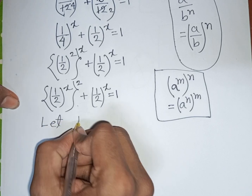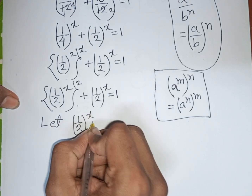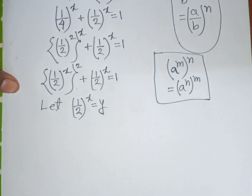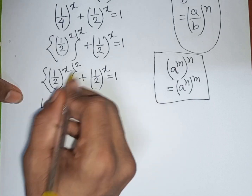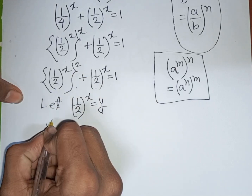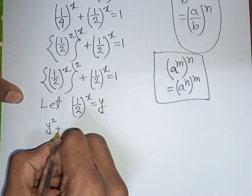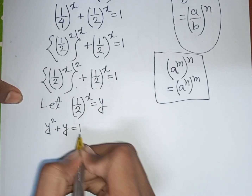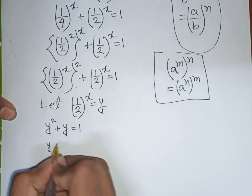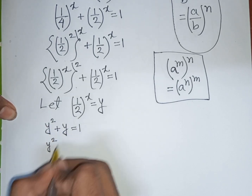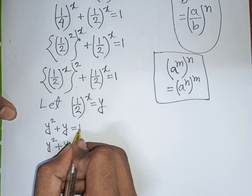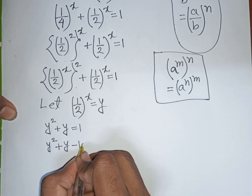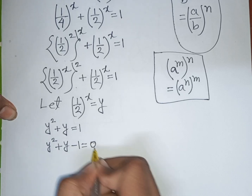We see that (1/2)^x appears in both terms, so let y = (1/2)^x. Our equation becomes y² + y = 1, which rearranges to y² + y - 1 = 0.